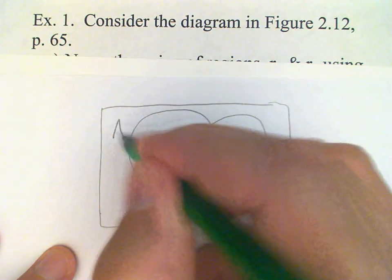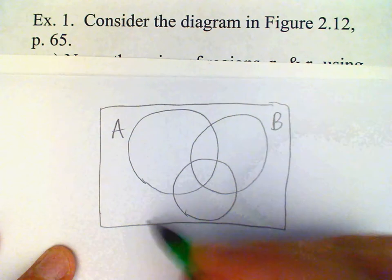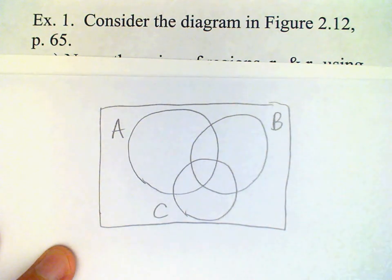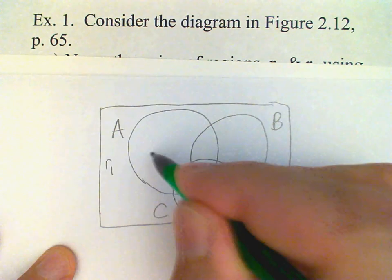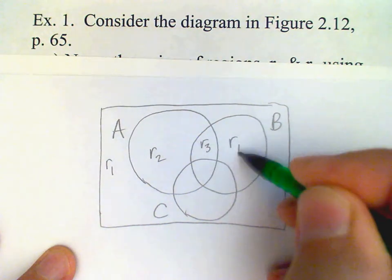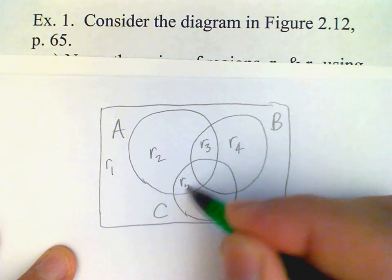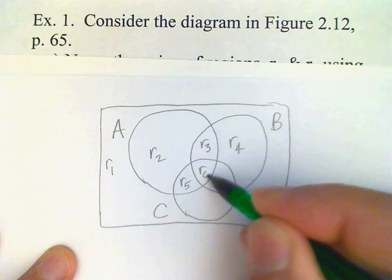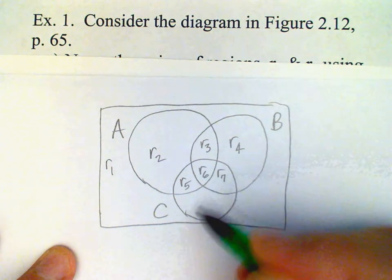So we'll call this A, B, and C, and then label the regions R1, R2, R3, R4, R5, R6, R7, and R8.